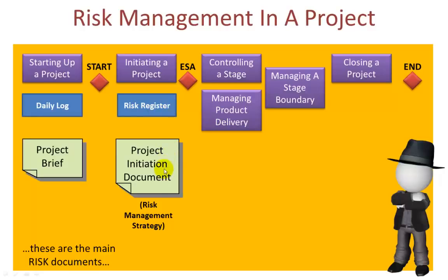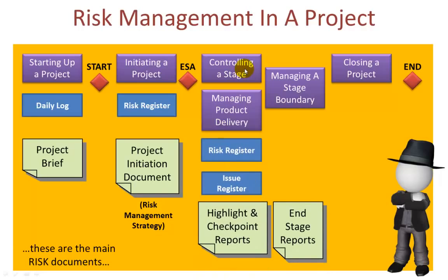The project initiation documentation is created and in particular the risk management strategy document, which is the approach you take to managing risks. During a typical delivery stage, the Controlling a Stage and Managing Product Delivery processes work together — the project manager in Controlling a Stage and the team manager and specialist team members in Managing Product Delivery. Risk can arise at any point and can change during the life of a project, so the risk register would need to be updated if either of those situations arise. Issues can be raised and these may cause some impact to the risks themselves, and any particular risk may cause a new issue to be raised. The main products during a stage are the highlight and checkpoint reports, which contain the status of any particular risks.